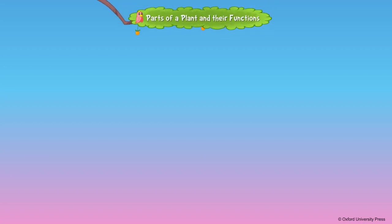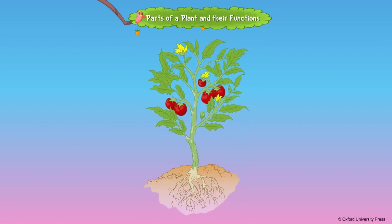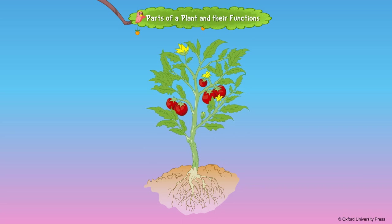Parts of a plant. Root is the most important part of the plant, which supports the plants above the ground and supplies water and minerals from the soil to the other parts of the plant.